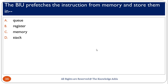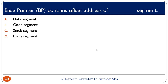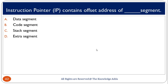The BIU fetches instructions from memory and stores them in the queue. The CS register stores instructions in the form of codes, so option C is correct. The base pointer contains the offset address of a segment — specifically, the base pointer BP contains the offset address of the data segment. So the correct option is data segment.